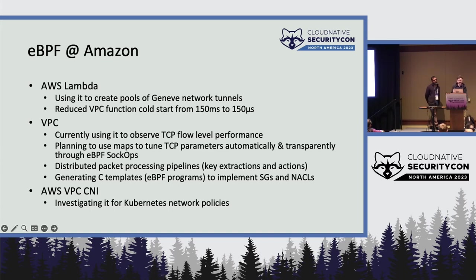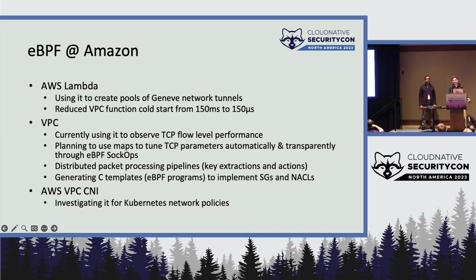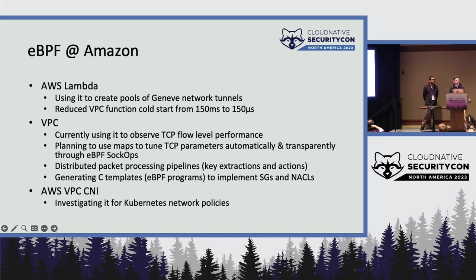We also have a distributed packet processing pipeline written in eBPF, and it's used to implement security groups and NACLs. For Amazon EKS, Amazon's managed Kubernetes offering, the VPC CNI today does not include a policy engine — we make use of the Calico or Cilium policy engine. In the future, we're going to add support for network policy using eBPF.